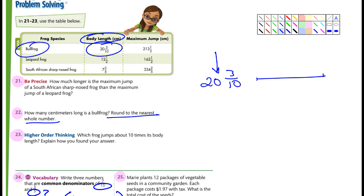And then the last two, let me move this up. 24 and 25. So 24, I looked at it with the other class, and I thought it was worded, it was kind of confusing. It says, write three numbers that are common denominators of, and that's 7 and 15, and that's 5. I guess I'm going to find the common denominators of 15 and 5, because those are the denominators.